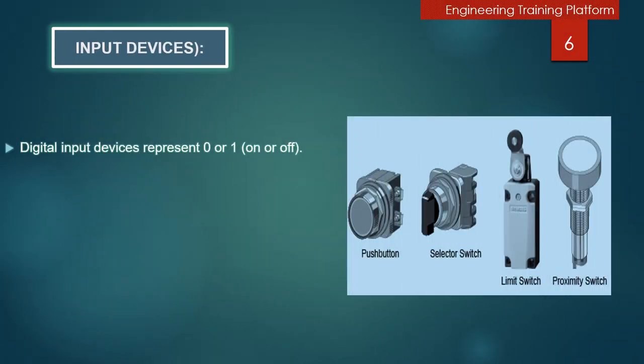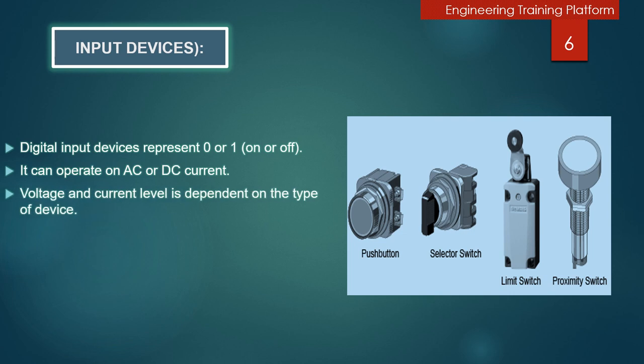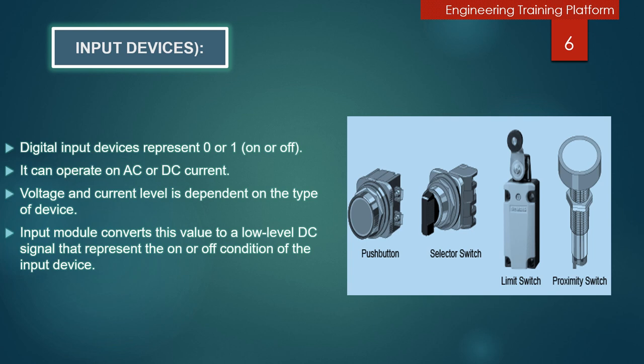Digital input devices such as push buttons, selector switches, limit switches, proximity switches which are shown in the picture. Digital input devices represent 0 or 1. They can operate on AC or DC current. Voltage and current level depends on the type of device. Input modules convert these values to a low-level DC signal that represents the on or off condition of the input device.